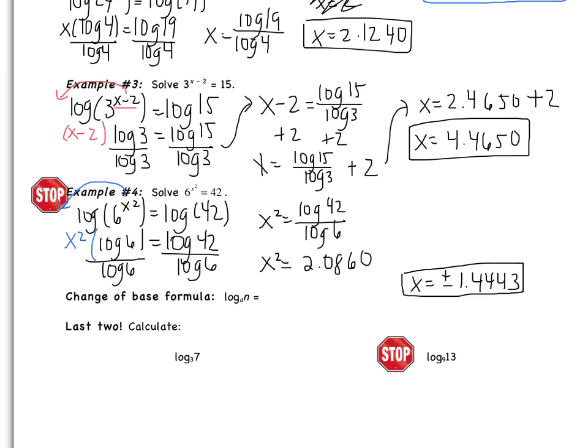So I get x squared equals log of 42 divided by log of 6. That ends up being 2.0860. Okay, but that's x squared. I want x, so from here I have to take a square root. So I end up with x equals 1.4443 once I take the square root. Remember that if you take the square root, you get a positive and a negative answer. So that's how I get my two solutions to be plus or minus 1.4443.